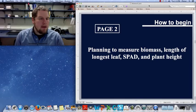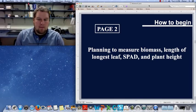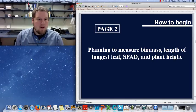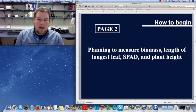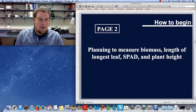So getting to page two, I would just write down the things that I'm planning to measure. So biomass, length of longest leaf, SPAD, plant height. These are things that I would measure, but your dependent variables may be different than mine. So write down a list of your dependent variables and how you plan to actually measure them.